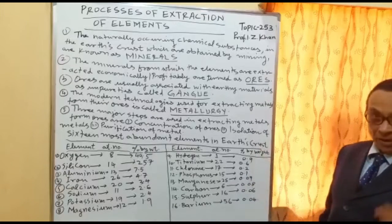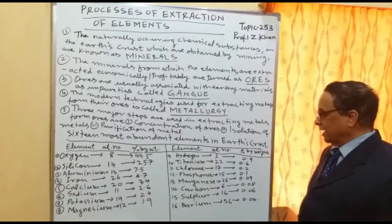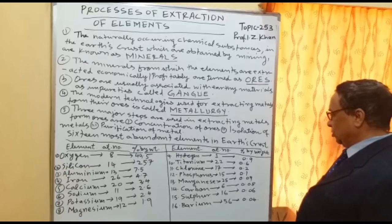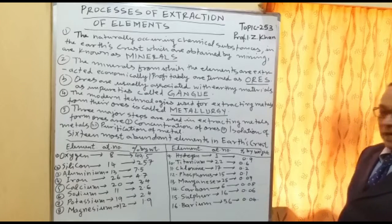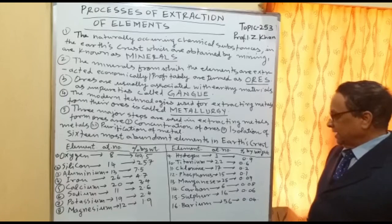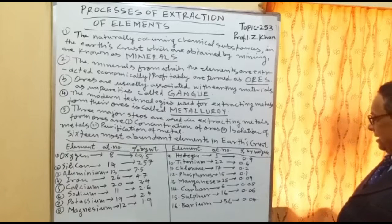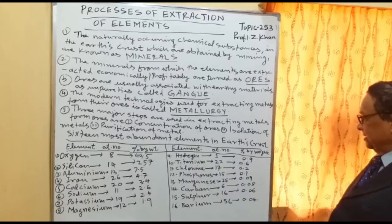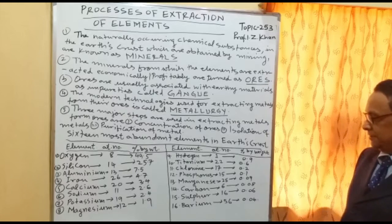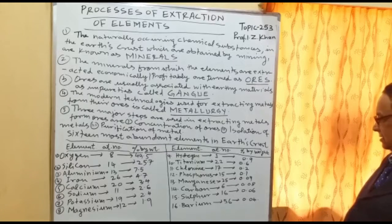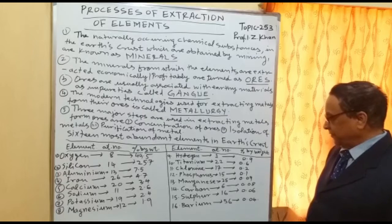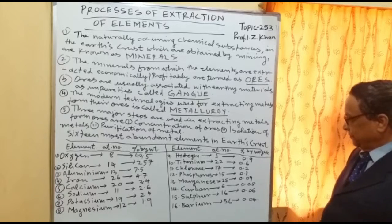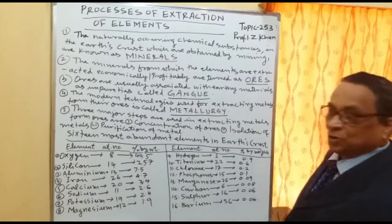Ninth is hydrogen, atomic number 1, the smallest, 0.9% by weight. Tenth is titanium, atomic number 22, 0.6%. Eleventh is chlorine, atomic number 17, 0.2%. Twelfth is phosphorus, atomic number 15, 0.1%. Thirteenth is manganese, atomic number 25, 0.09%. Fourteenth is carbon, atomic number 6, 0.08%. Fifteenth is sulfur, atomic number 16, 0.06%. Sixteenth is barium, atomic number 56, 0.04%.